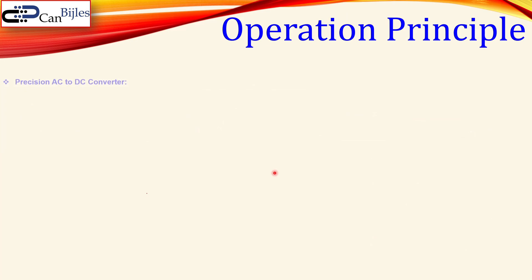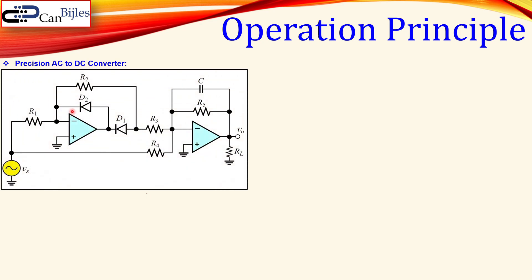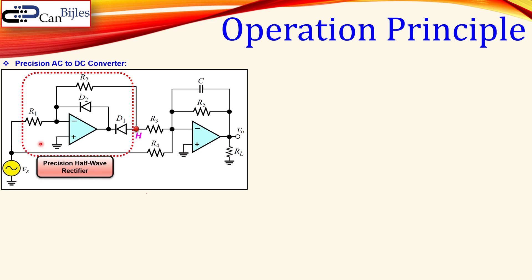The operation principle has already been discussed in detail in a different video about the precision full-wave rectifier. We will now build the precision AC to DC converter using that precision full-wave rectifier. The exact same circuit is used — the only addition is this capacitor that will make this DC conversion, the AC to DC conversion. We give this node H here, which is our output voltage for this part, which is the precision half-wave rectifier.